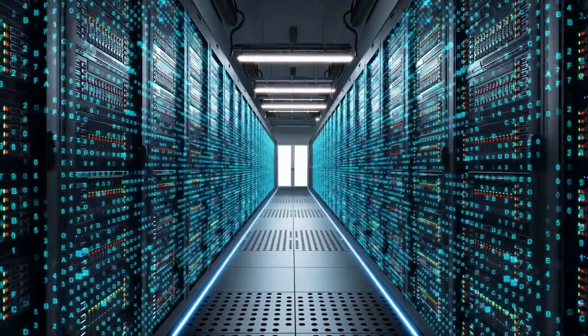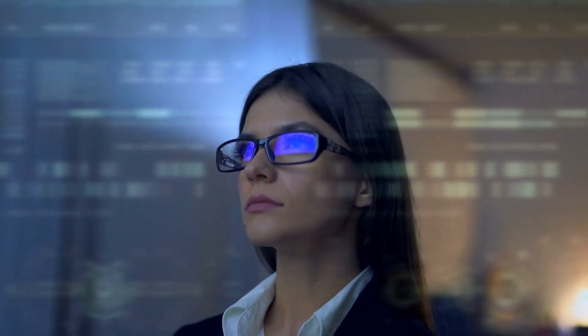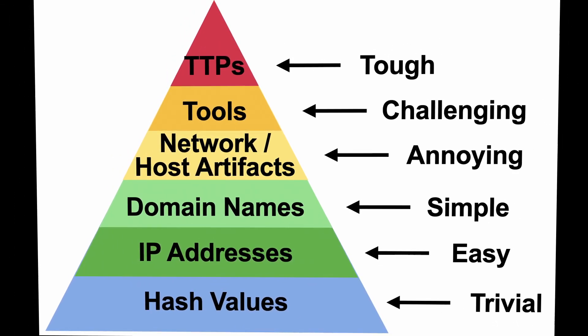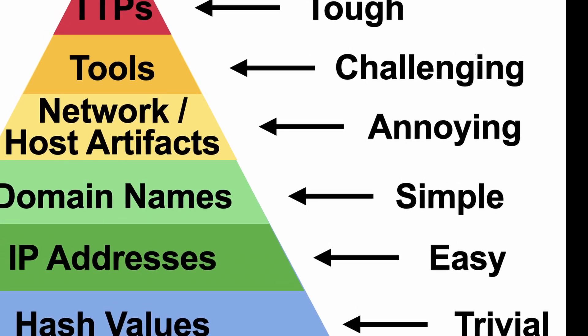The pyramid of pain helps us rank each IOC that we collect and identify what defenses can do to make offense much more difficult. This not only helps us understand the IOCs that we're collecting, but it also helps us understand the different actions we can take to really disrupt cyber attacks either before they happen or even as they're happening. This is a concept developed in 2014 by David Bianco — a link to his article is in the video description. Basically, it graphically ranks different IOCs from least valuable to most valuable, overlaid with how much pain it causes attackers, from trivial impact at the bottom to large impact at the top.